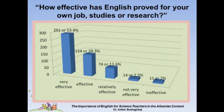When given the question of how effective English has proved for their own job, studies, or research, the following results were collected: 291 subjects, or 53.4%, viewed it as very effective; 154 subjects, or 28.3%, view it as effective; 74 subjects, or 13.6%, mark it as relatively effective; 14 subjects, or 2.5%, chose not very effective; and 11 subjects, or 2%, chose ineffective. It becomes very clear that a large majority of people in the focus groups see English as between very effective and effective in their education, jobs, or research.